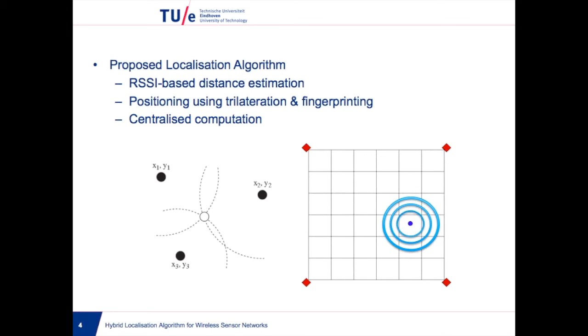Trilateration is a localization method that calculates the position based on distances from three references to a common point. A circle is drawn surrounding each reference point, and the estimated position is determined by the intersection of the circles, as shown on the figure on the left.